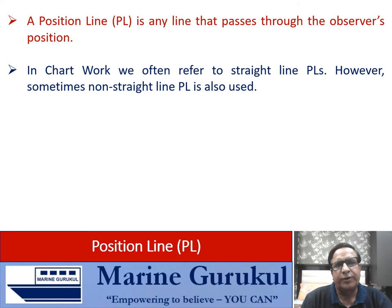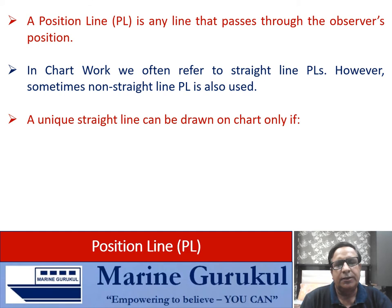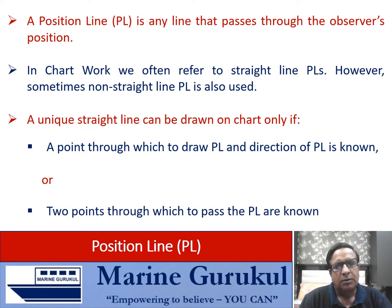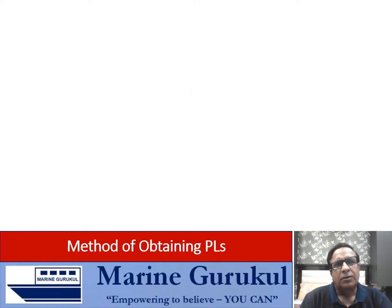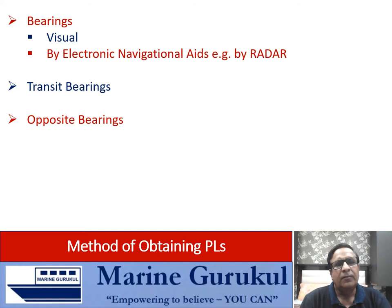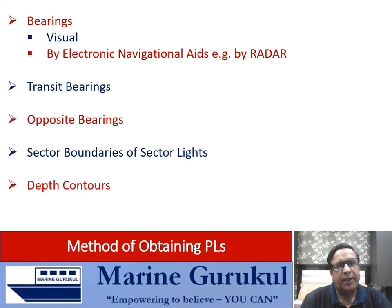In chart work we often refer to straight line PLs, though non-straight line PLs are also sometimes used. A unique straight line can be drawn on a chart or any plane surface only if: a point through which to draw the PL and the direction of the PL are known, or two points through which to draw the PL are known. Methods that can provide a PL include: bearings (visual or electronic/radar), transit bearing, opposite bearings, sector boundaries of sector lights, and celestial position lines.